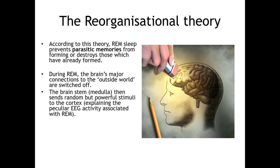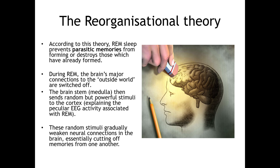During REM sleep, the brainstem — that's the medulla, the section at the bottom of your brain — sends random but very powerful stimuli up into the cortex. The cortex is the outside part of the cerebrum at the top. This would explain why there is so much brain activity during REM sleep — it's all these random and powerful signals coming up from the brainstem. The more these signals are powered through into the cortex, the more these neural connections — basically these memories — weaken and are cut off from one another. Your brain works in a series of links, so the more links you sever, the more those memories are destroyed.